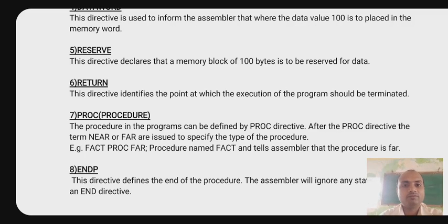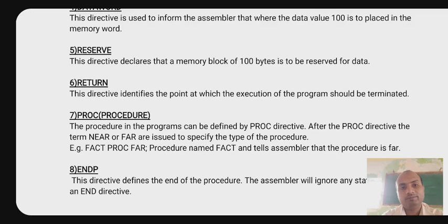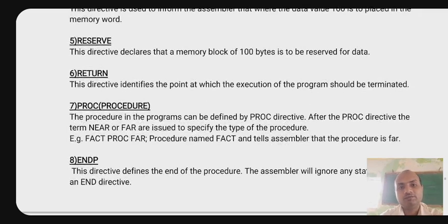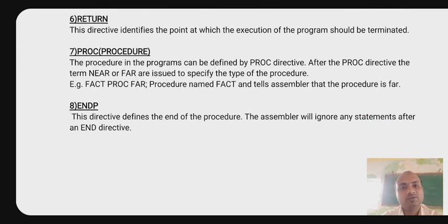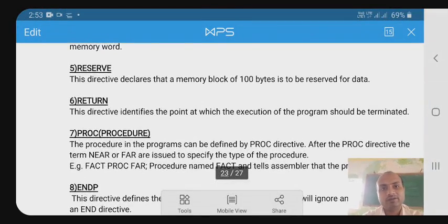After the PROC directive, the terms NEAR or FAR are used to specify the type of the procedure. For example, PROC FAR declares a procedure named FACT and tells the assembler that the procedure is FAR. ENDP indicates the end of the procedure. The END directive defines the end of the program, and the assembler will ignore any statements after the END directive.